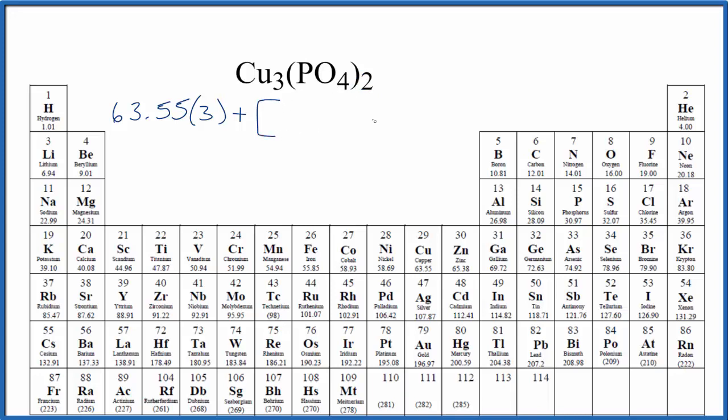So let's put brackets here and we'll find phosphorus which is 30.97 grams per mole and we only have one of those, so we just have the one phosphorus.